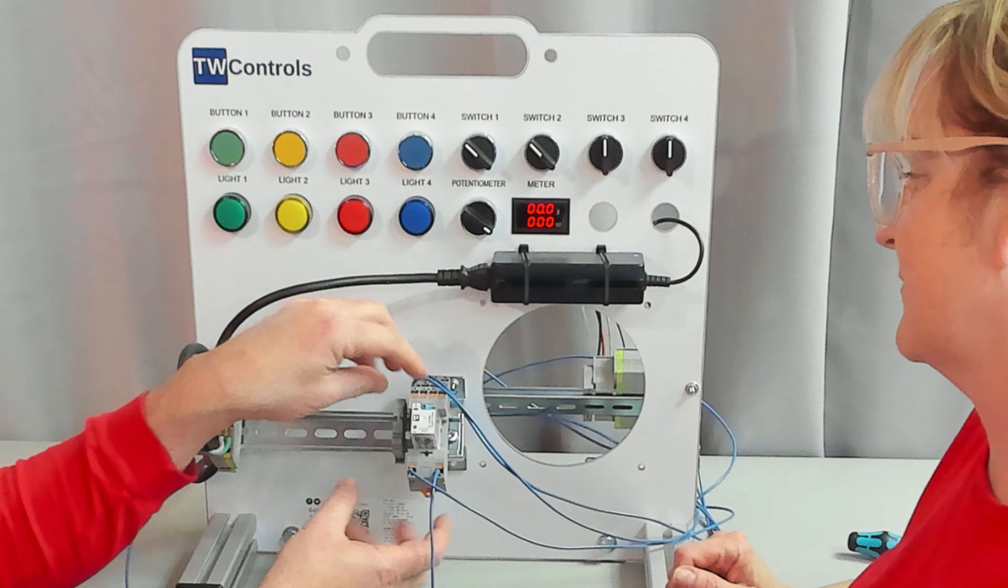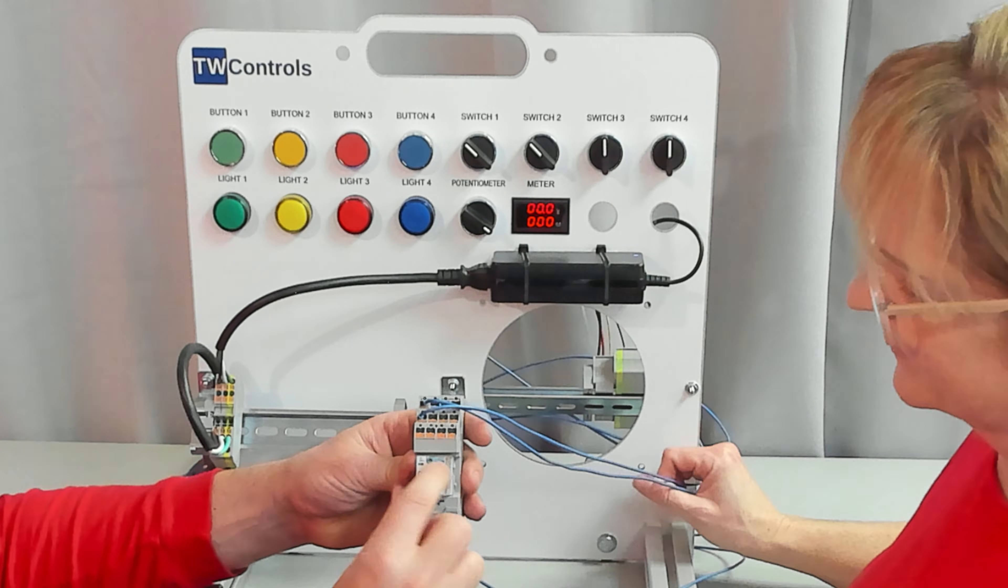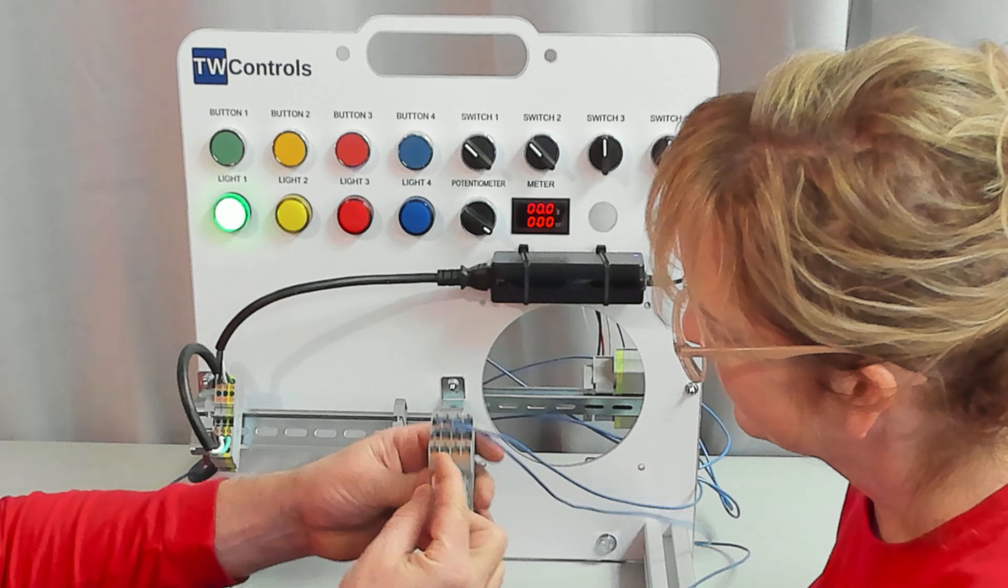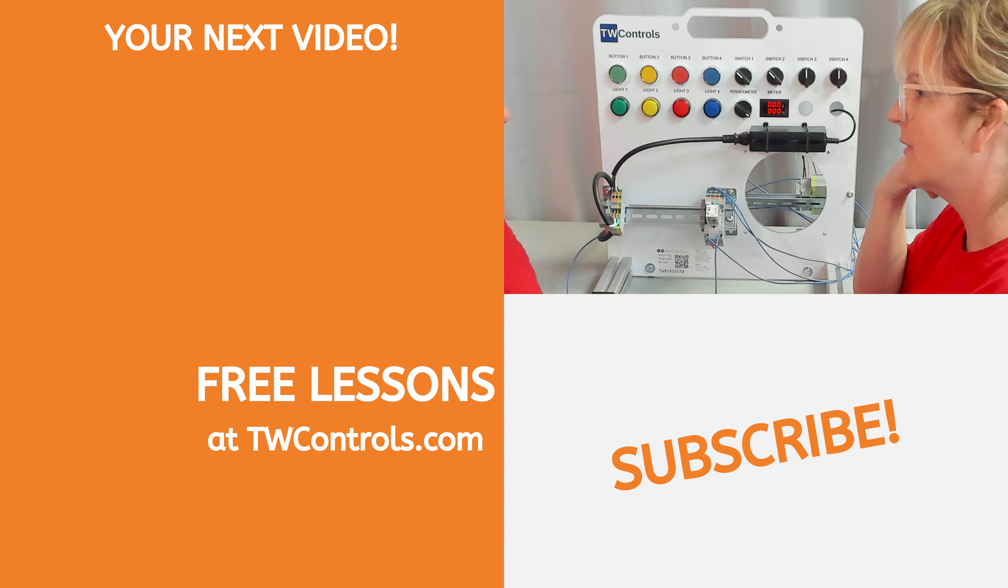Also on most relays, you'll find an override. So if we look at the front of this relay here, here's the override. If I raise it up, it turns on. Why does it turn on if you raise it up? What does the override do?